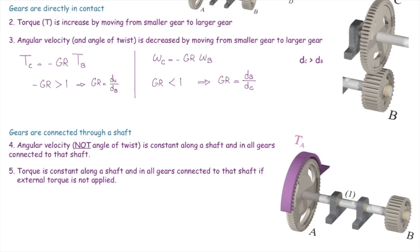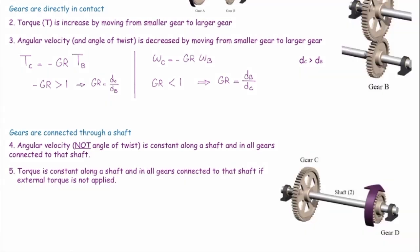In two and three, we have gears directly connected together. In four and five, we have gears connected by shaft.